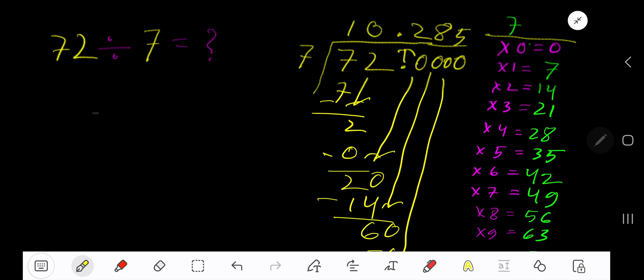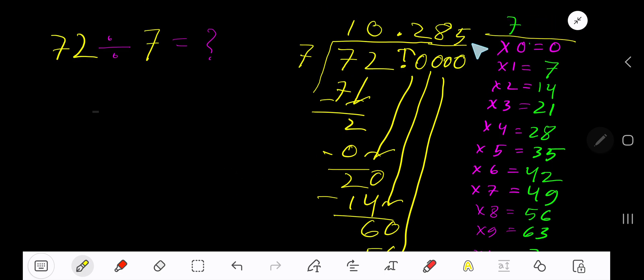You can bring down more 0s, but since we have gotten 3 places after the decimal, just place here 3 dots. So our answer is 10.285 dot dot dot.